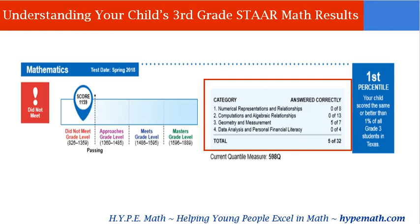Another portion of the STAR report you need to focus on is the specific math categories. Even if your child did meet grade level, looking at the individual categories they may have scored low in some areas — meaning those areas still need to be focused on. If they're struggling in a category in third grade and don't receive reinforcement, that struggle will continue into fourth grade.